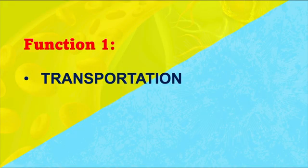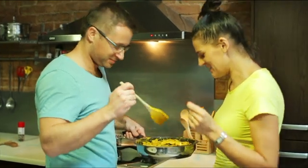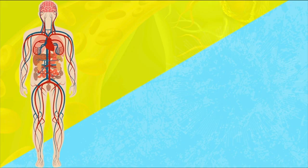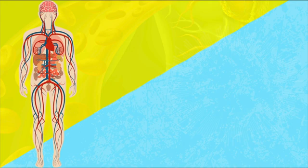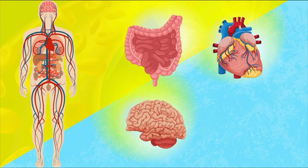Blood has three main functions. The first one is transportation — you want to get the good stuff to where it needs to go, and you want to get rid of the bad stuff. Let's say you just had lunch. It goes through your digestive system, gets broken down, and the nutrients get absorbed along your digestive tract. Now we've got to get those nutrients to the different organs in your body — your heart, your brain, your muscles. And guess how those nutrients get to all those structures? Blood.